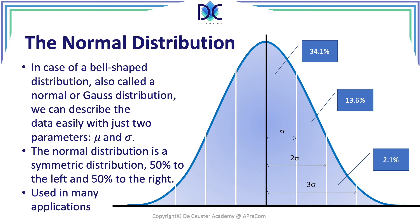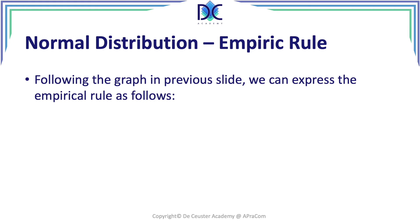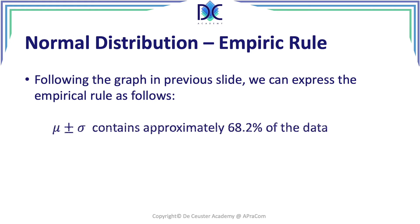That's why the normal distribution is so interesting when calculating certain parameters. When we use the PERT or three-point formula, we find an average and a standard deviation, and with that we can use the normal distribution to calculate the link between duration and probability. Another very interesting element is what we call the empiric rule: mu plus or minus sigma contains approximately 68.2 percent of the data.